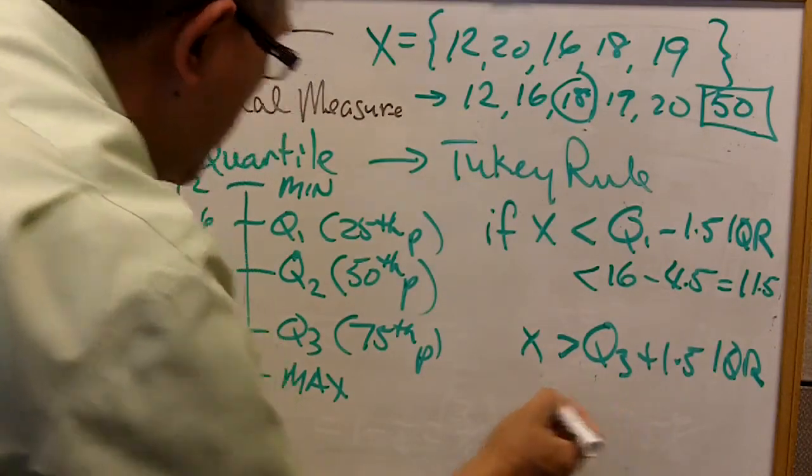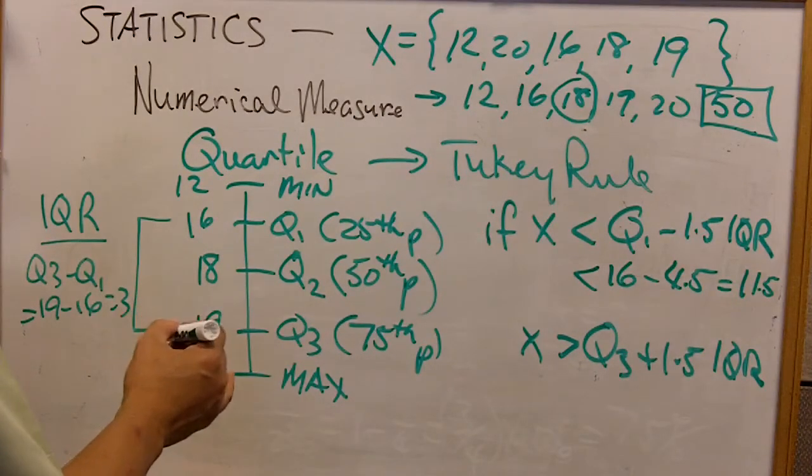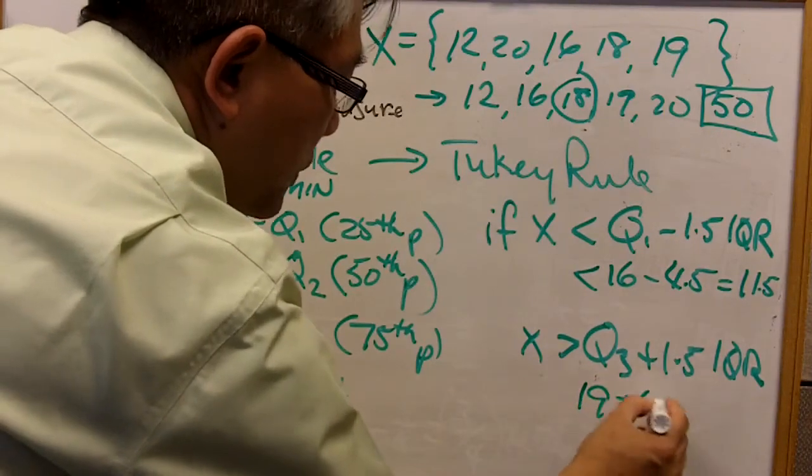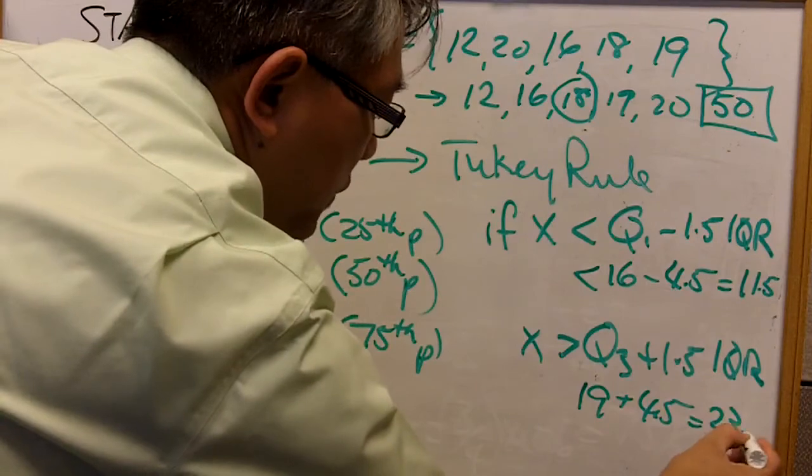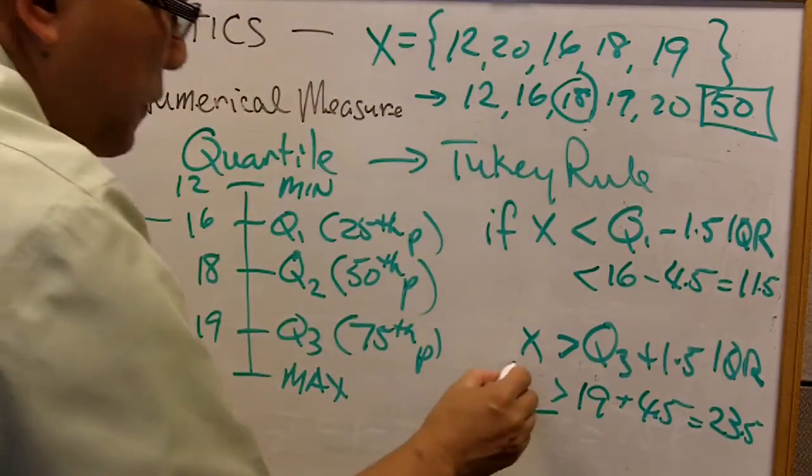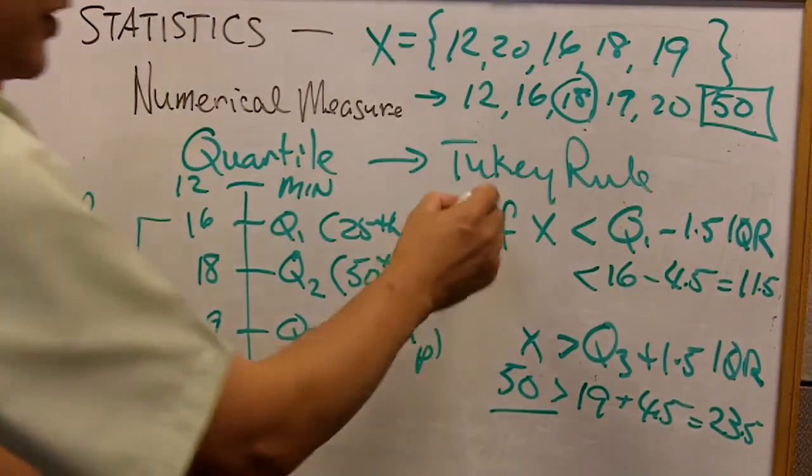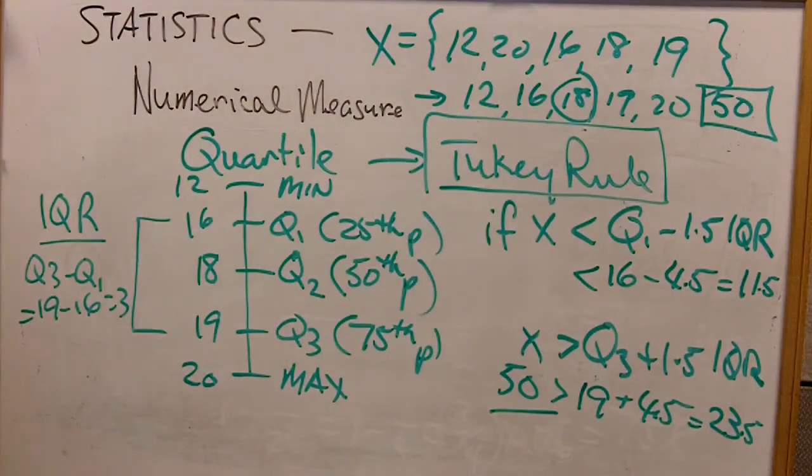Well, it's Q3 plus 1.5 times IQR. What is that value? So it's 19 plus 4.5, which equals 23.5. Now, is X greater than that? So 50 is the new value. 50 is greater than 23.5. And using the Tukey rule, we have established that the 50 is an outlier because it falls outside the upper bound established by the Tukey rule.